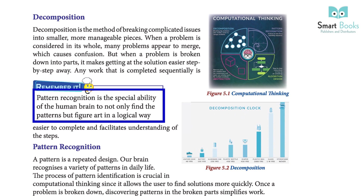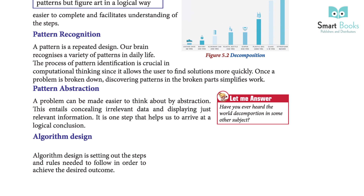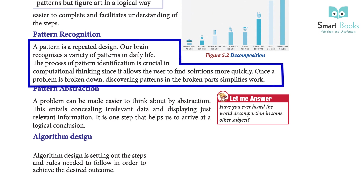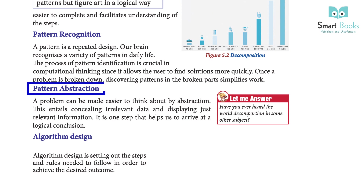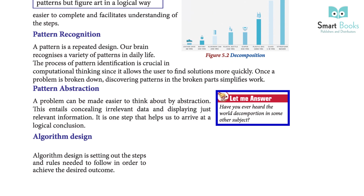Pattern recognition is the special ability of the human brain to not only find patterns but figure them out in a logical way. A pattern is a repeated design. Our brain recognizes a variety of patterns in daily life. The process of pattern identification is crucial in computational thinking since it allows the user to find solutions more quickly. Once a problem is broken down, discovering patterns in the broken parts simplifies work.